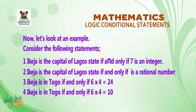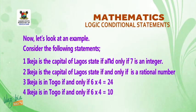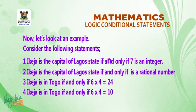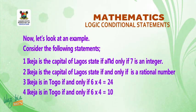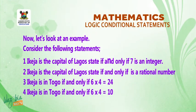Now let's look at examples. One: Ikeja is the capital of Lagos State if and only if seven is an integer. Two: Ikeja is the capital of Lagos State if and only if pi is a rational number. Three: Ikeja is in Togo if and only if six times four is twenty-four. Four: Ikeja is in Togo if and only if six times four is ten.